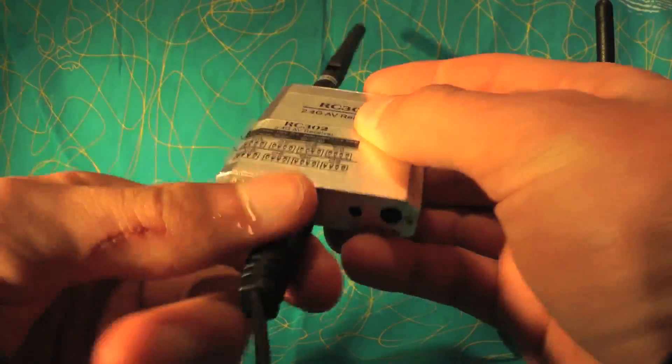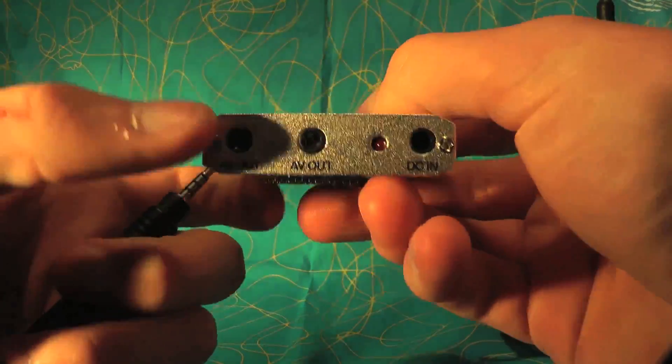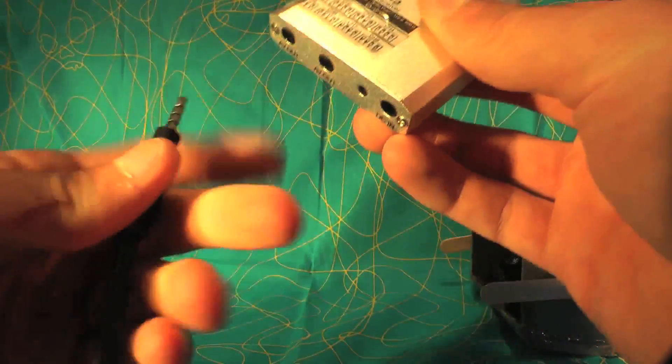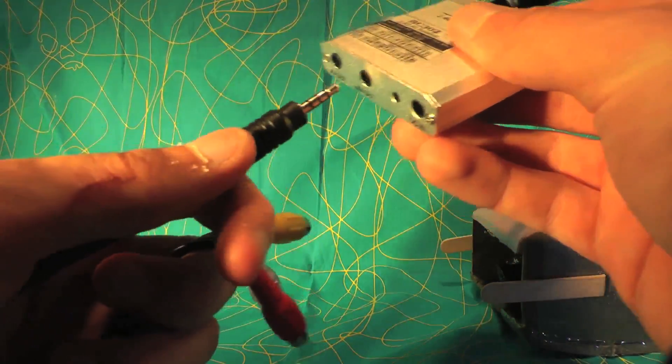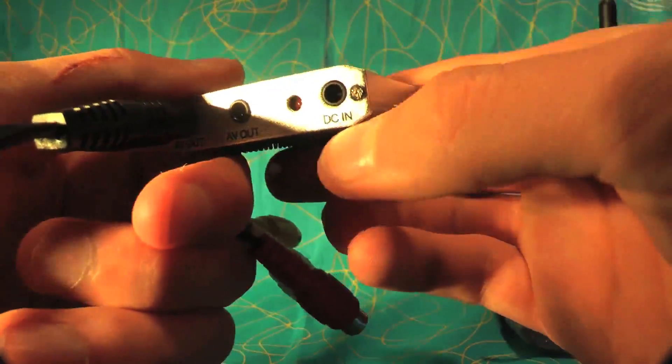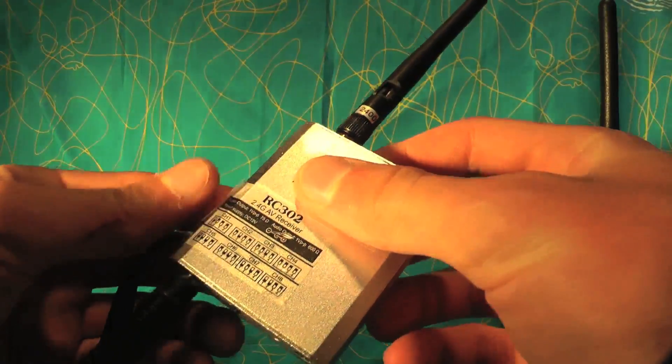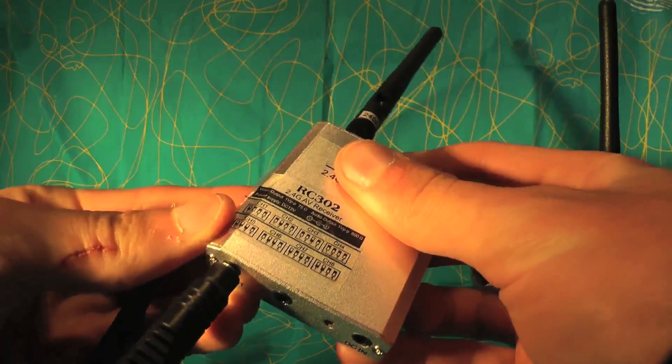Another thing is it has two video outputs. So if you just get another one of these cables, you can hook one to your goggles and one to your recording device, and then 12 volts in right there. So it's a very compact, small receiver. It doesn't really get hot at all when you're using it, so that's good.